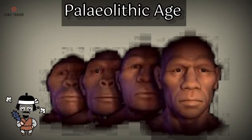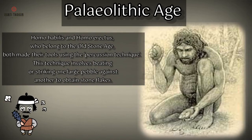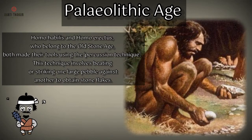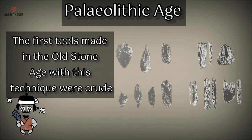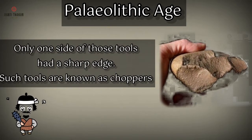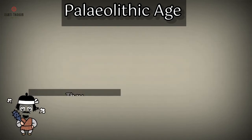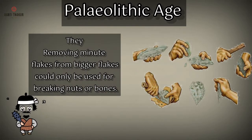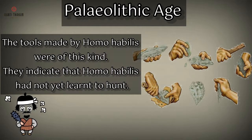Paleolithic Age. Homo habilis and Homo erectus, who belong to the old stone age, both made their tools using the percussion technique. This technique involves beating or striking one large pebble against another to obtain stone flakes. The first tools made in the old stone age with this technique were crude. Only one side of those tools had a sharp edge. Such tools are known as choppers, and could only be used for breaking nuts or bones. The tools made by Homo habilis were of this kind, indicating that Homo habilis had not yet learnt to hunt.